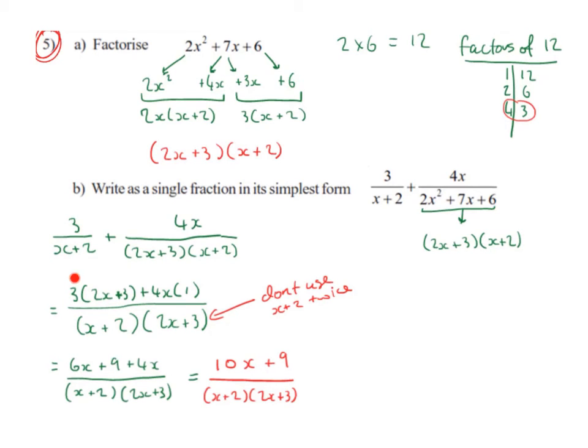So then we set up the top of our fraction. We bring down the 3 and it's going to be multiplied by something. We bring down the plus. We bring down the 4x and that's multiplied by something. So x plus 2 and x plus 2 will cancel out, leaving us with 2x plus 3 which we put up here.